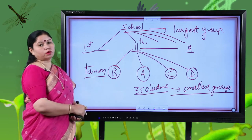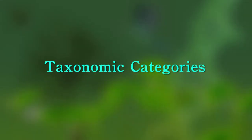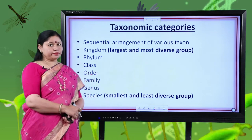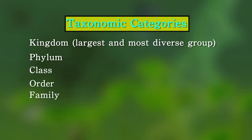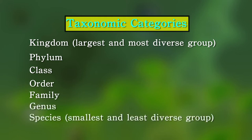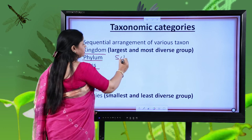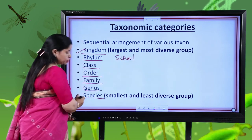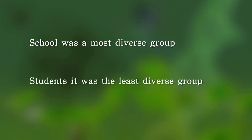The term for a category is taxon, and a taxon also represents a rank. There are 7 taxonomic categories starting from kingdom, which is the largest and most diverse group, then phylum, class, order, family, genus, and species — where species is the smallest and least diverse group. You can compare kingdom with the school in my example, and species with the students of a particular section.